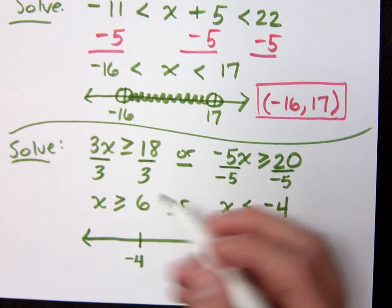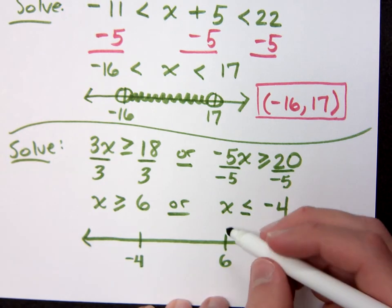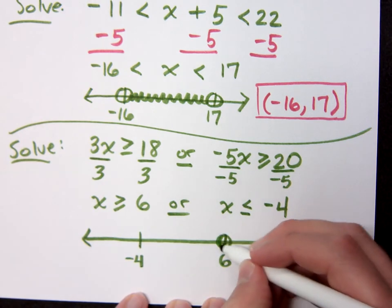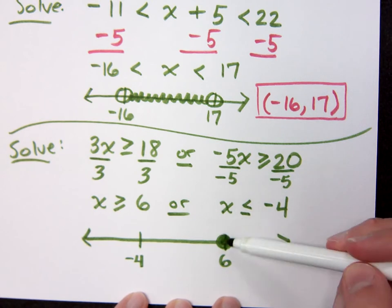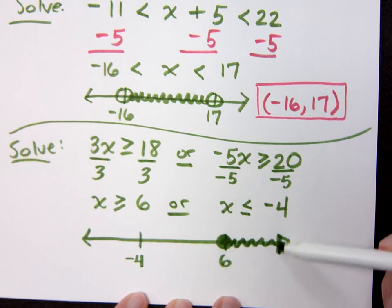Now, x is greater than or equal to 6. What does that look like here on the number line? Closed, because I get to include it. Shading out which way? To the right. Shading out to the right.